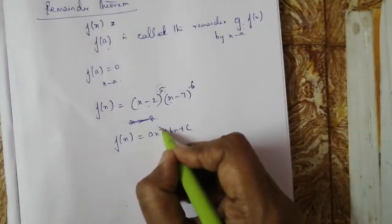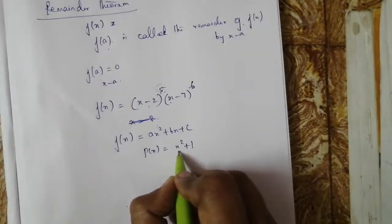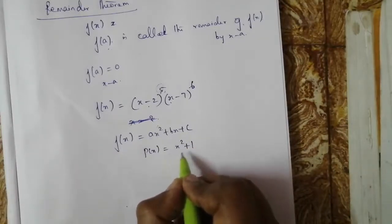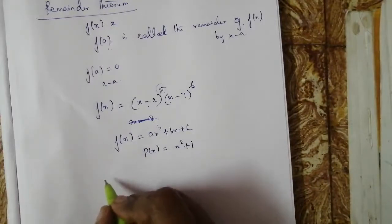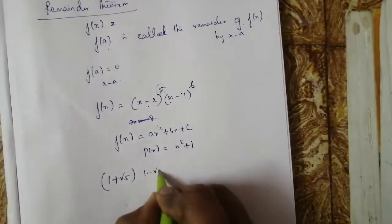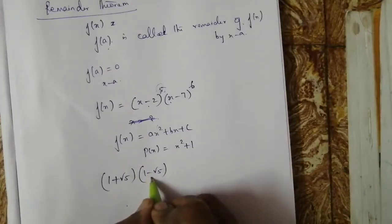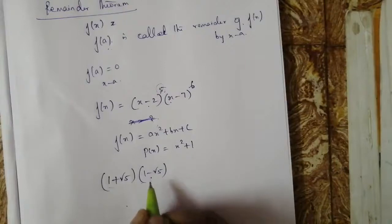It depends upon the degree of the polynomial. For example, p(x) = x² + 1 has no real zeros, since x² = −1 gives x = ±√(−1) which is not real. Irrational factors always appear in pairs — for example, if (1 + √5) is a factor, then (1 − √5) is also a factor.